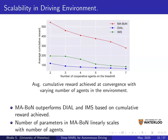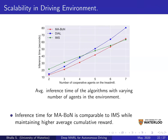Looking at scalability: as the number of agents on the treadmill increases, MABN (red line) outperforms Dial and IMS in the scalability test for the driving environment. Regarding inference time, IMS and MABN both show linear inference time as the number of agents increases, which is important for real-time centralized execution.